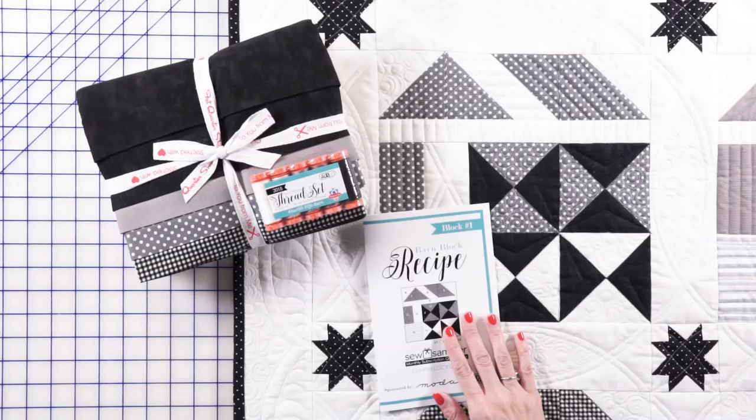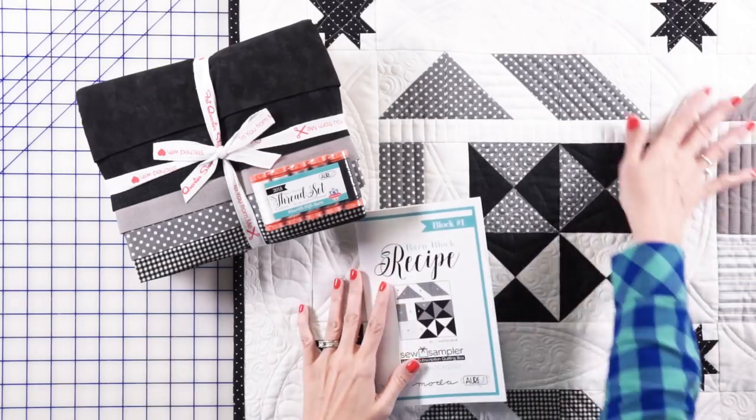So from April 2018 to March of 2019, in each box you will get a pattern. This is how the pattern looks, it's on really nice glossy cardboard, really nice and thick. It's got the cutting instructions for one block. And then in March of 2019 will be the finishing, which is to put it all together.